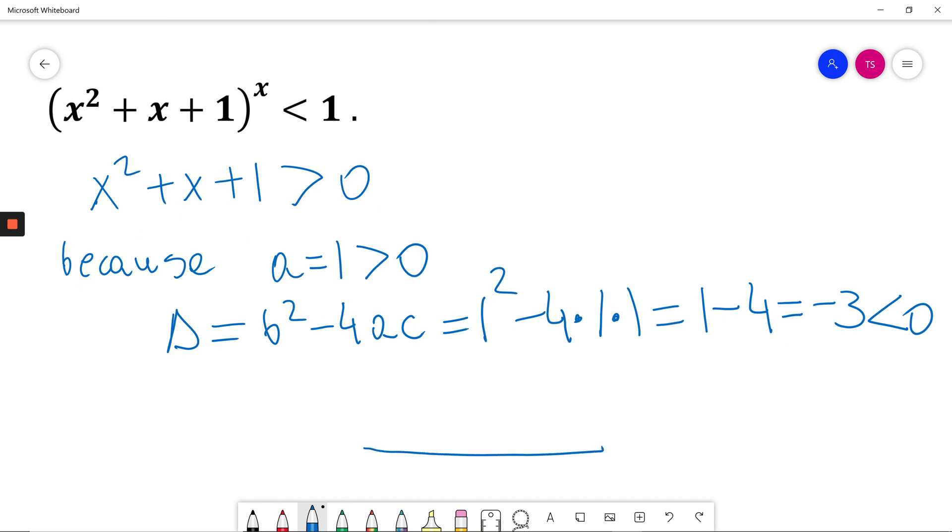So when I graph that parabola, I have arms up because a is positive, and no roots because the discriminant is negative.